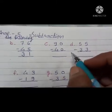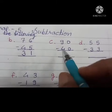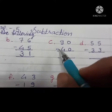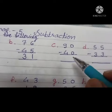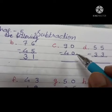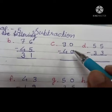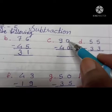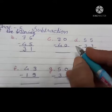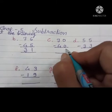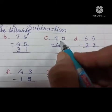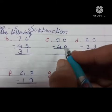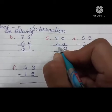Next, C. Subtract ones first. 0 minus 0 equals 0. Then tens: 9 minus 4 equals 5.